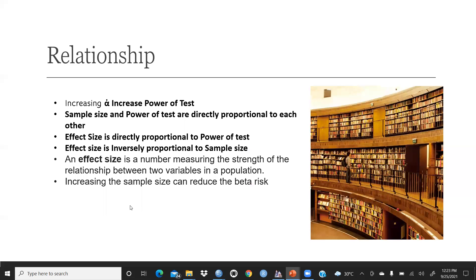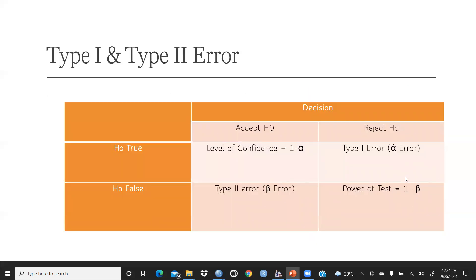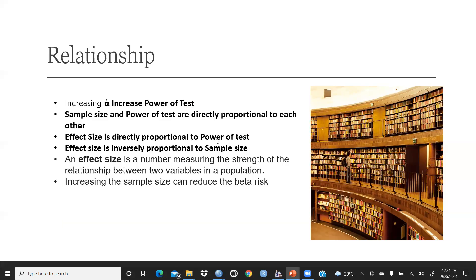Now let's check all these relationships. When alpha increases, the power of the test also increases. Sample size and power of the test are directly proportional to each other. Effect size is directly proportional to power of the test — if effect size increases, power also increases. Effect size is inversely proportional to sample size — when effect size increases, required sample size decreases, and when sample size increases, effect size decreases. Effect size is a number measuring the strength of the relationship between two variables in a population.